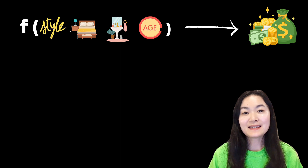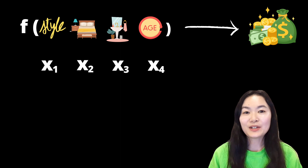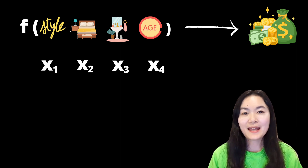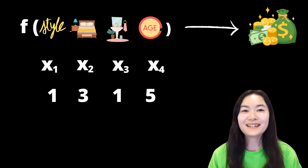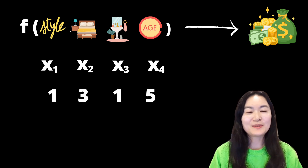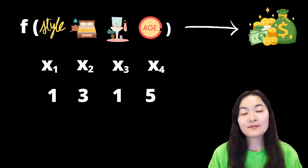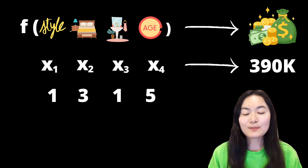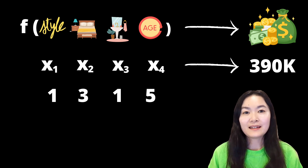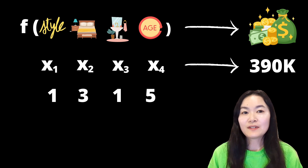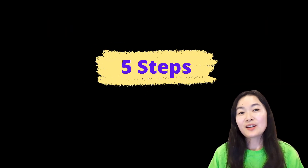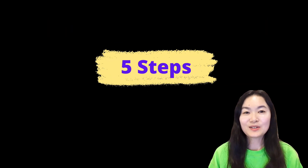Let's say we have an instance of four values: x1, x2, x3, x4. For example, we have style 1, 3 bedrooms, 1 bathroom, and the house is 5 years old. We want to understand how this instance predicted 390k in the housing price and what are the contributions of each feature to this prediction. Here are 5 steps to do the calculation.